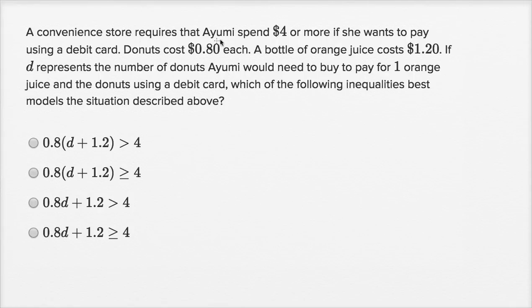A convenience store requires that Ayumi spend four dollars or more if she wants to pay using a debit card. Donuts each cost 80 cents. A bottle of orange juice costs a dollar 20. If D represents the number of donuts Ayumi would need to buy to pay for one orange juice and the donuts using a debit card, which of the following inequalities best models the situation described above?